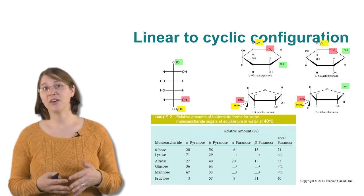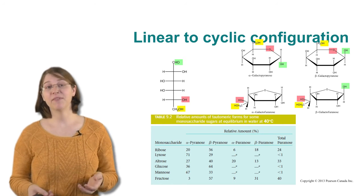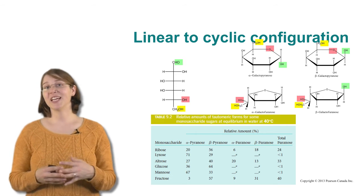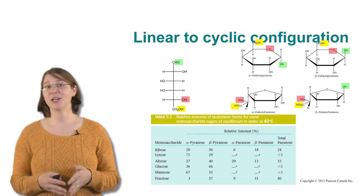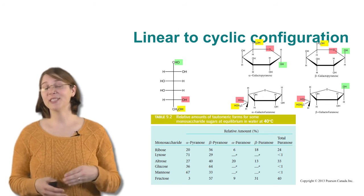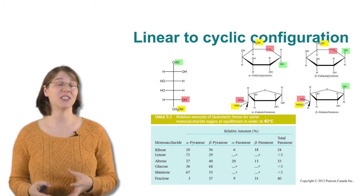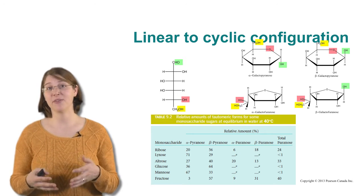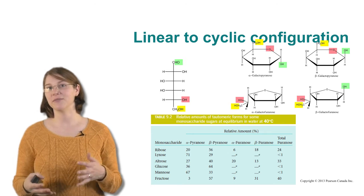The six-membered rings are called pyrans and the five-membered rings are called furans. So this gives sugar, one six carbon sugar, four additional forms. So sugars can have a huge diversity of structure, which allows them to have a large amount of function or a large diversity of function.